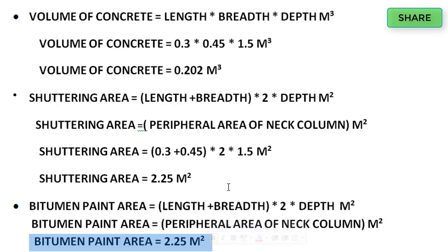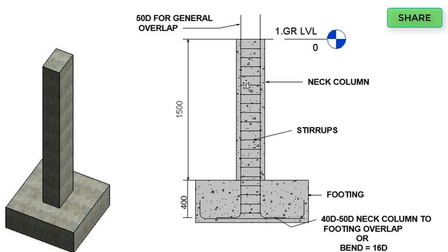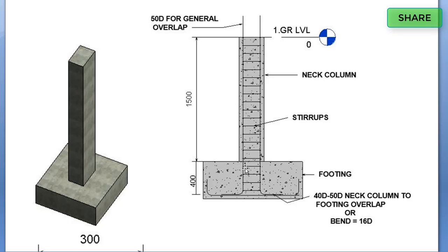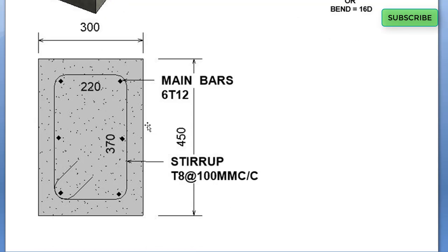For the same length, breadth, and depth we now have to calculate the reinforcement. This is the reinforcement drawing from a section of the neck column and footing. The neck column reinforcement starts from the footing and ends at the top. Detailing shows: neck column to footing anchorage is 40d to 50d, or bend equals 16d; general overlapping is 50d; total height is 1500 plus 400, which equals 1900 mm or 1.9 meters. For stirrups, the length is 300 mm, breadth is 450 mm, with 6 main bars of 12 mm diameter.